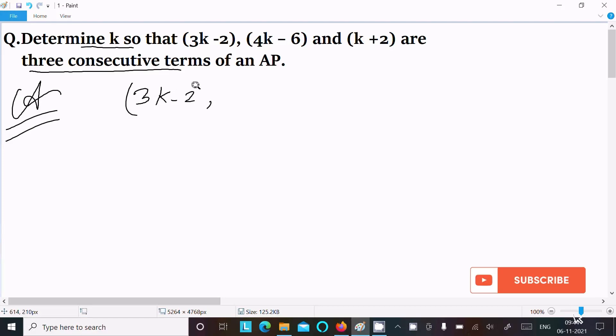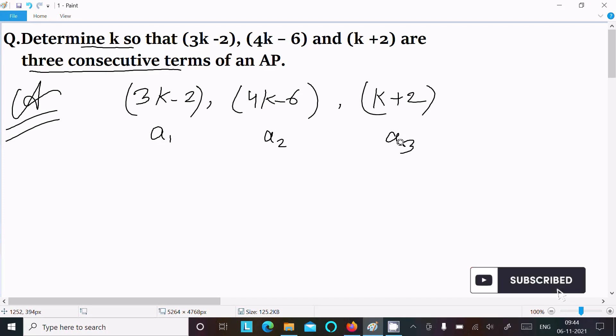the next is (4k-6), and here this is (k+2). Suppose this is t1, or you should write first term a1, second term a2, and this is third term a3. Now here the difference